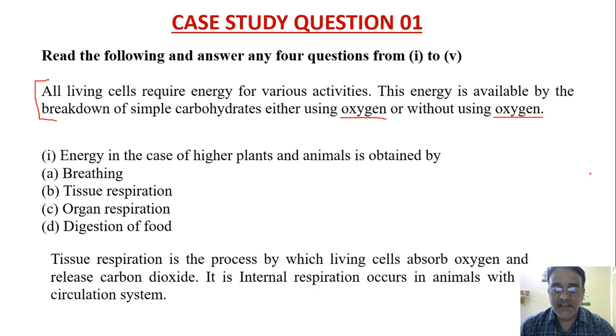It is internal respiration that occurs in animals with a circulation system. It is a type of cellular respiration and a metabolic process by which an organism obtains energy by reacting oxygen with glucose to give water, carbon dioxide, and energy. So the correct option is B.